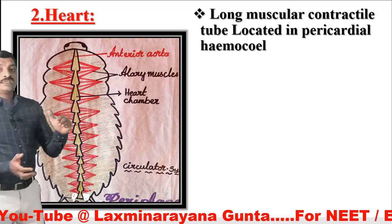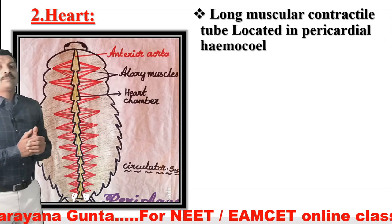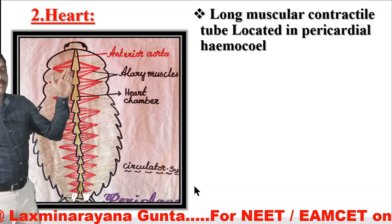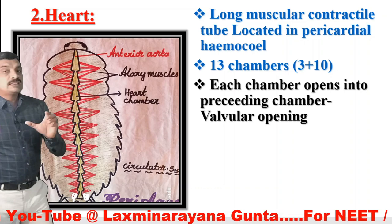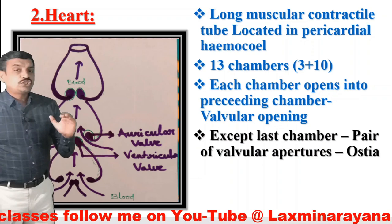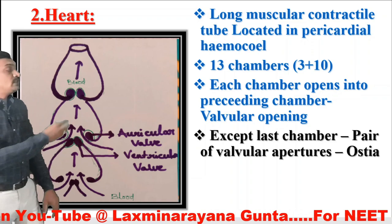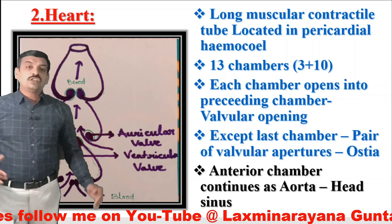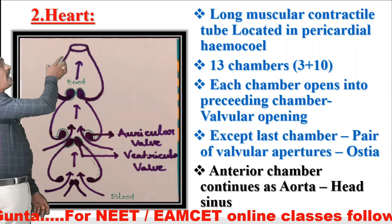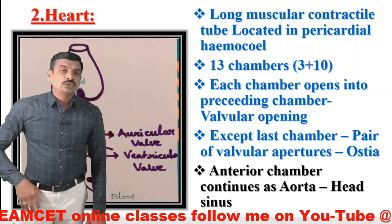The heart in cockroach is 13-chambered — a long muscular contractile tube located in the pericardial hemocoel. Three chambers are present in the thoracic region and ten chambers in the abdominal region. Each chamber opens into its preceding chamber with an angular opening. Except the last chamber, each chamber has valvular apertures on the lateral sides called ostia, which allow blood from the pericardial sinus into the heart. The anteriormost chamber continues as the aorta, leading into the head sinus.